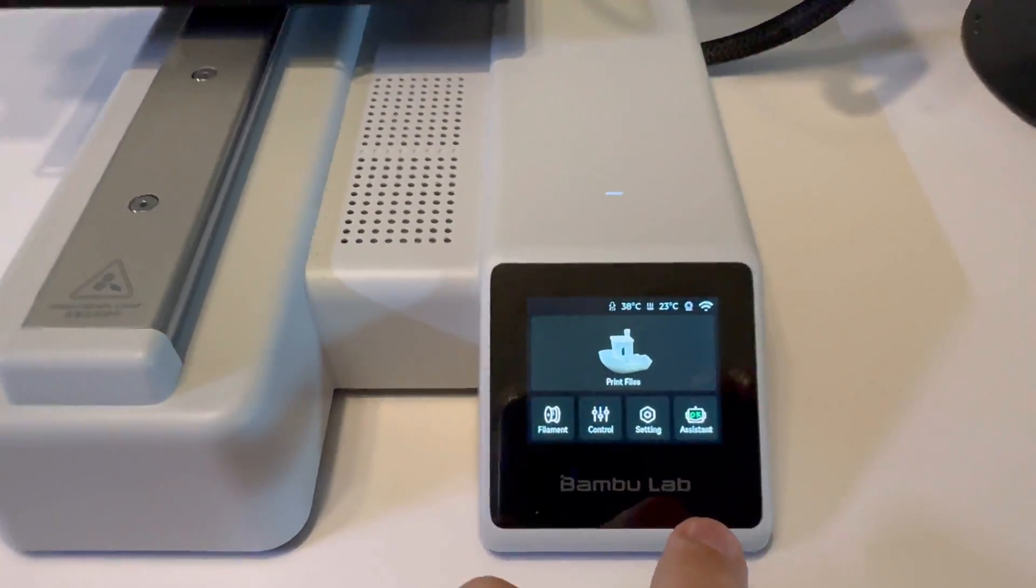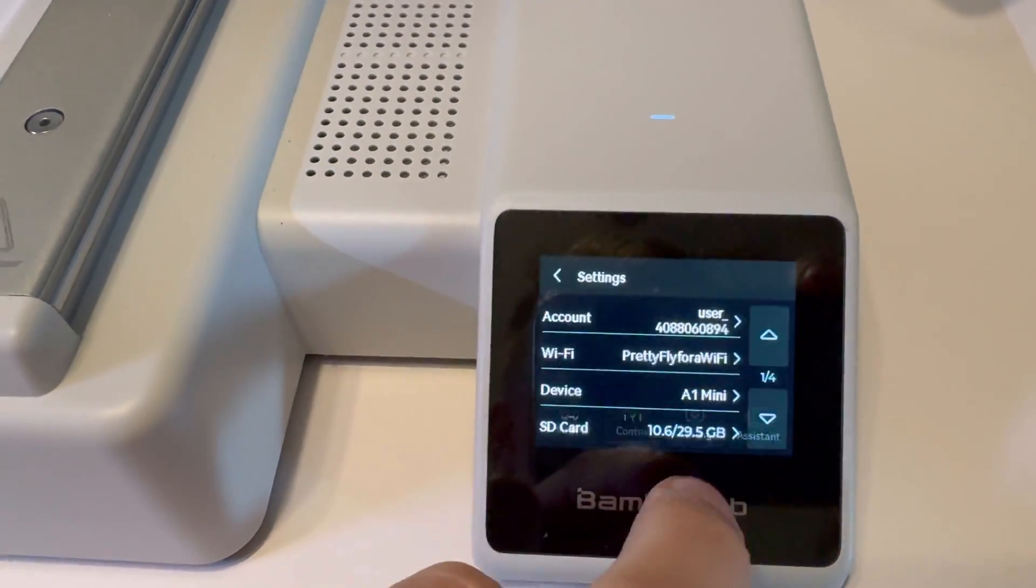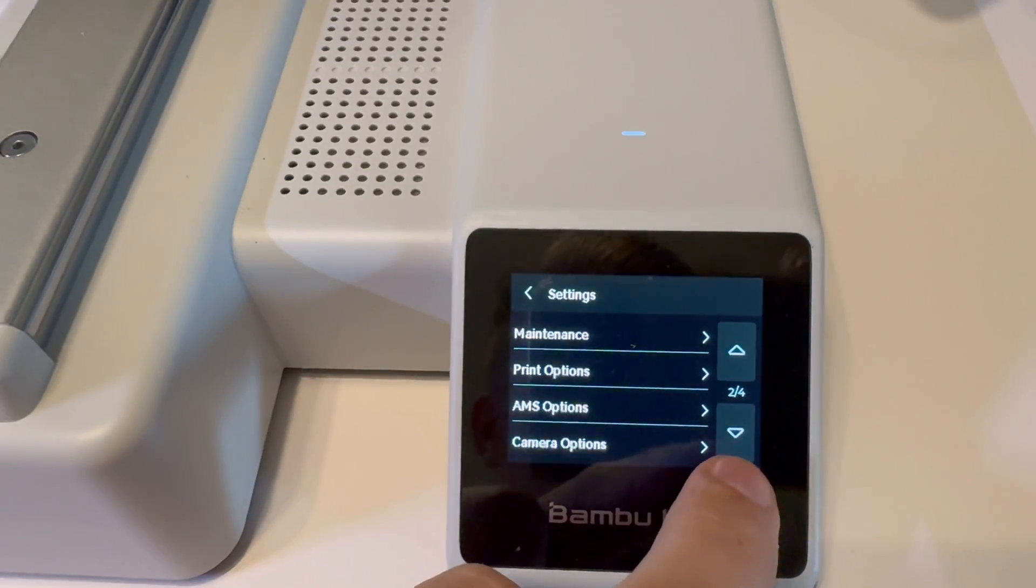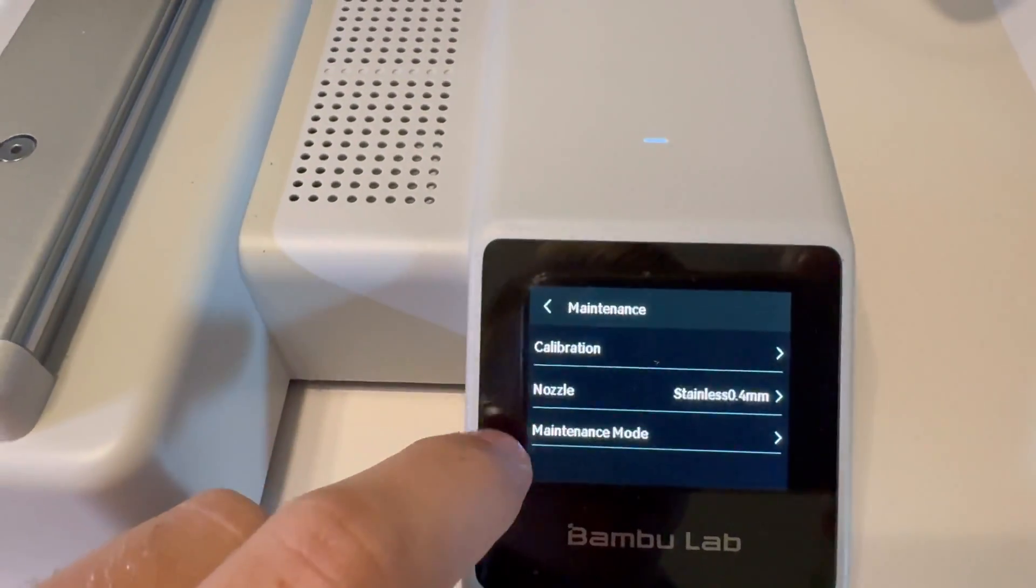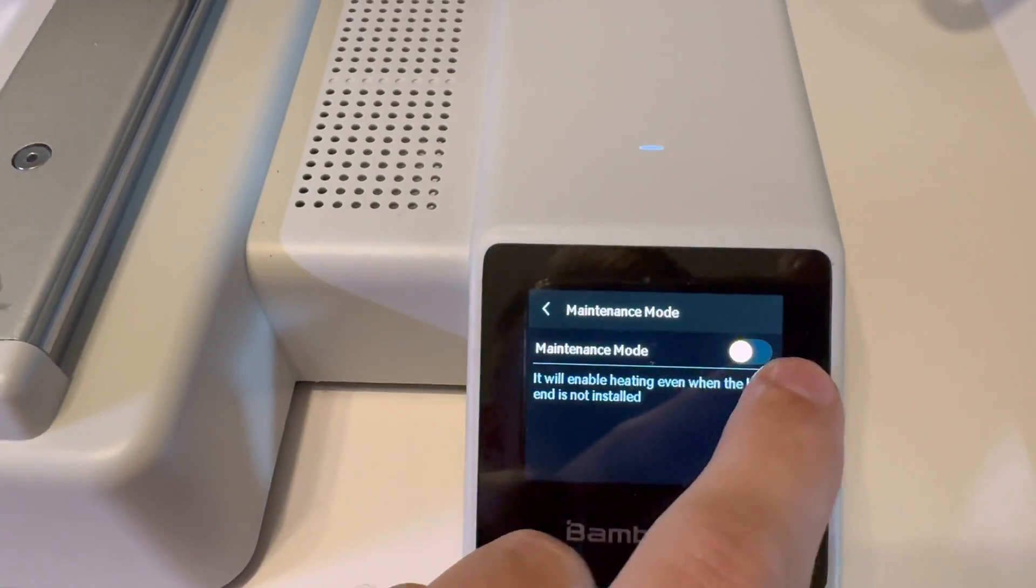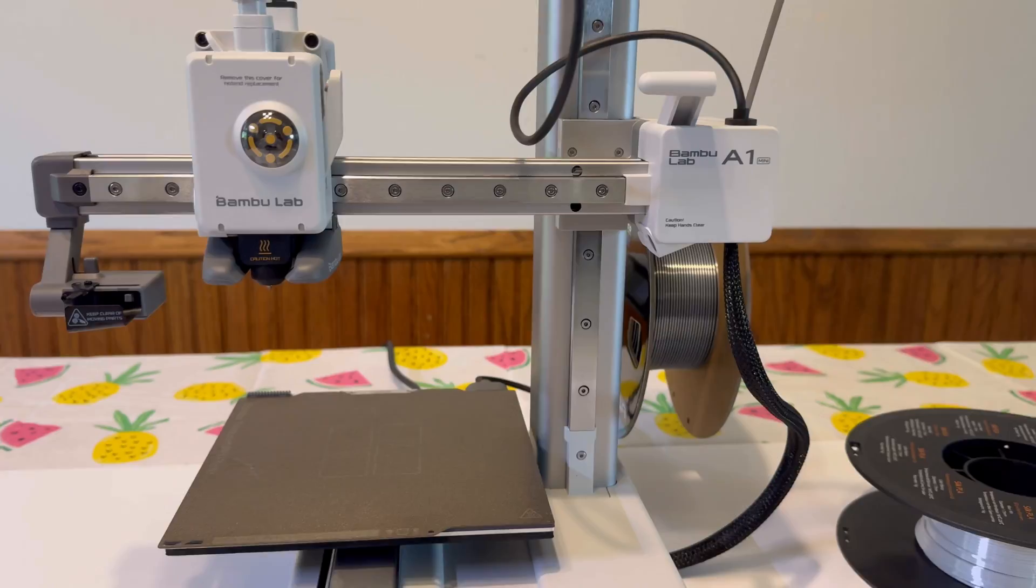So go on over to your display and click on the settings button here, and then scroll down. We need to be on page two, click on maintenance, and then click on maintenance mode, and we need to turn on maintenance mode.